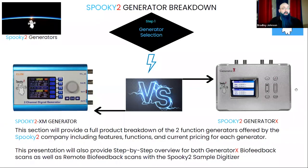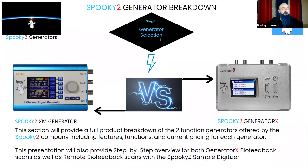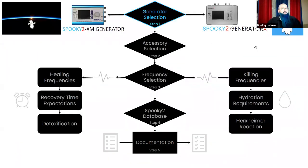If you were around last week, we introduced a five-step overview designed to help answer questions like: what do I do, where do I navigate, and how do I choose programs with the Spooky 2 products? This portion focuses on the first decision in that tree — what do I get when comparing the two generators? What are the features of both? This presentation will specifically focus on the primary differences between the XM Generator and the Generator X, including their biofeedback systems.